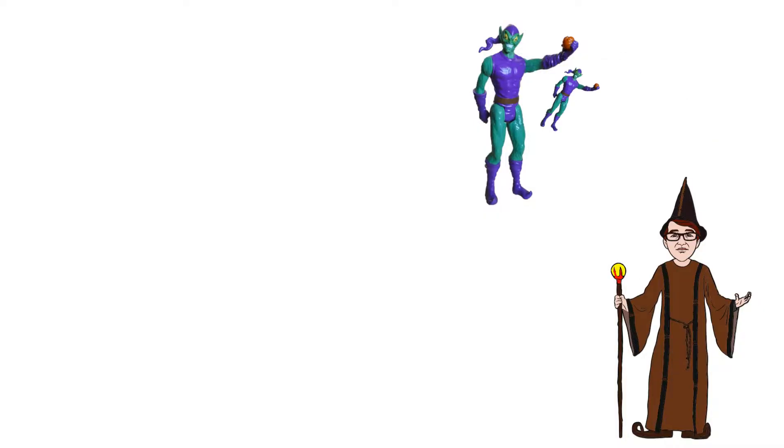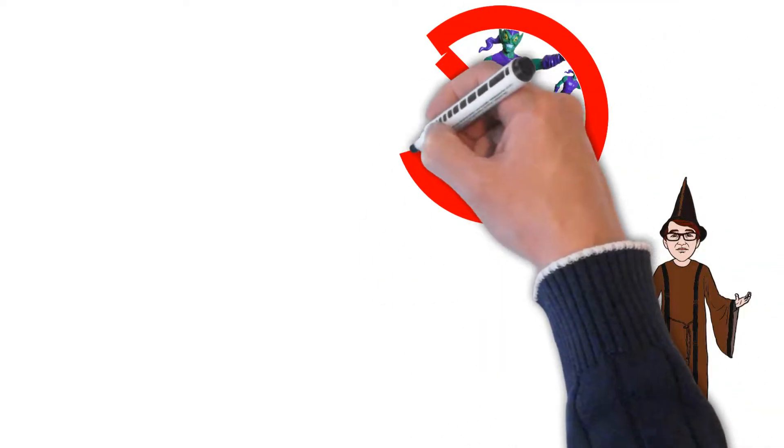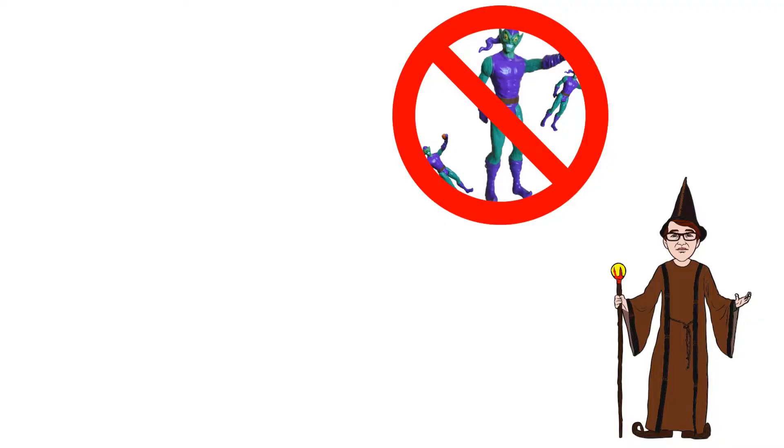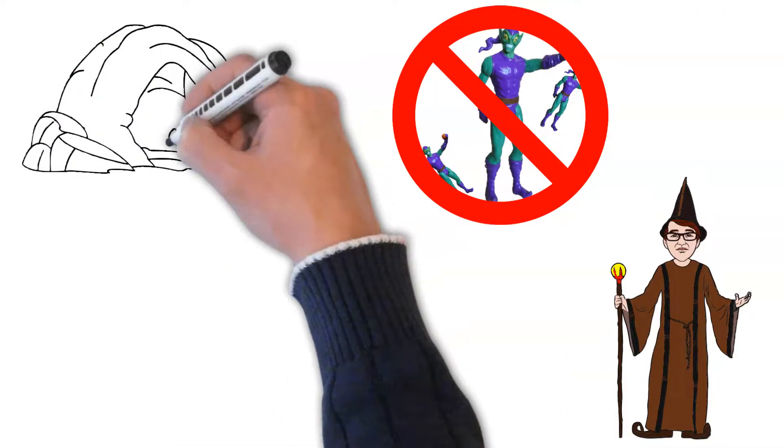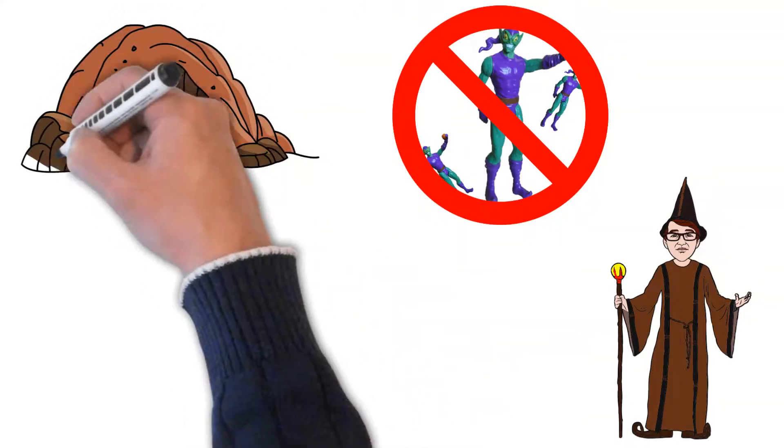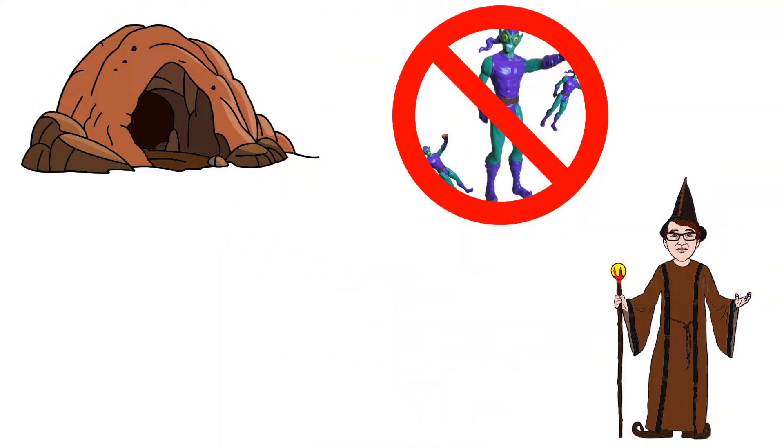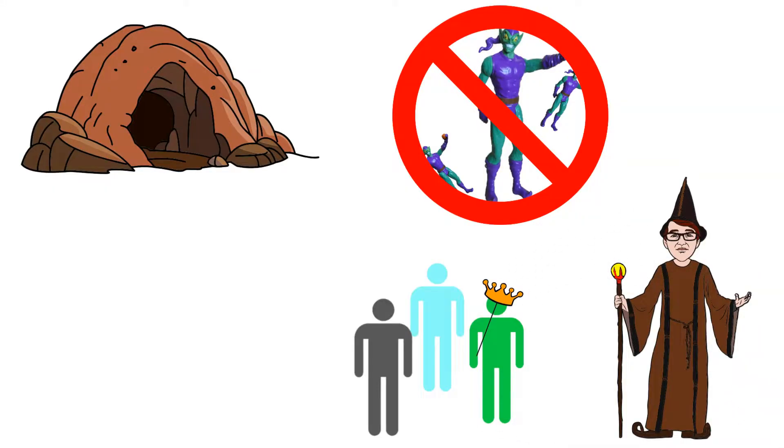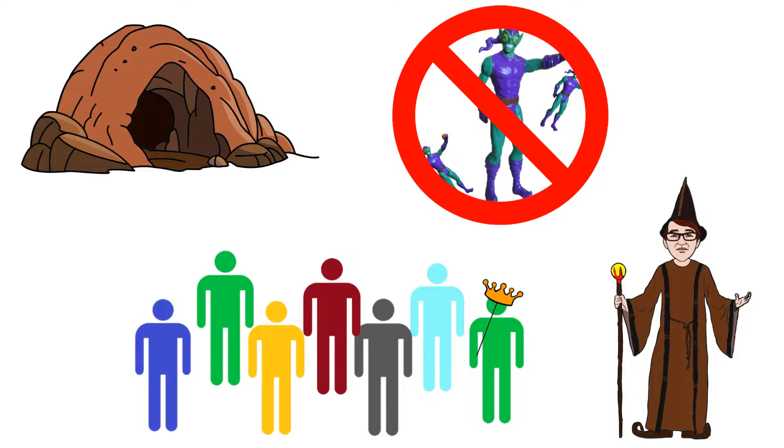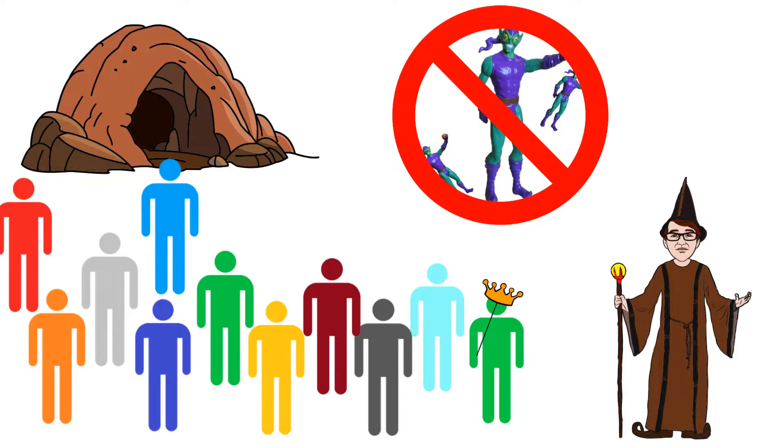Initially, Beorn was suspicious of the group, but Gandalf assured him that they were enemies of goblins and up to no mischief in his lands. Gandalf began to recount their journey and how they were attacked by goblins while crossing the mountains. He told Beorn of their refuge in a cave, getting captured by the goblins, and his killing of a few goblins before he slipped away unnoticed. As Gandalf spoke, more dwarves arrived until Beorn was satisfied that he had met everyone.